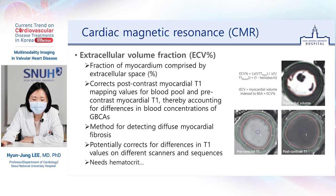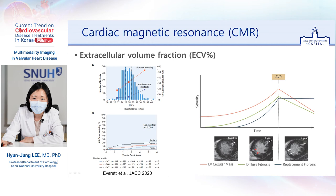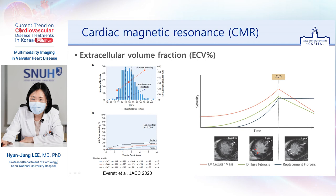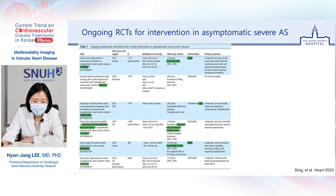The extracellular volume fraction is calculated using native T1 and post-contrast T1 values of the myocardium and the blood pool, and also the hematocrit. Conceptually, the ECV corresponds to the extracellular matrix and is a marker of diffuse myocardial fibrosis. The calculation of ECV potentially corrects for differences in T1 values caused by different scanners and sequences, and thus is a more robust parameter that can be used in multicenter studies. To calculate ECV, concomitant blood sampling for hematocrit is needed. Higher ECV values were an independent predictor of mortality. After AV replacement, while replacement fibrosis does not regress, diffuse fibrosis is observed to regress over time.